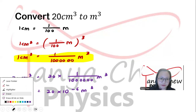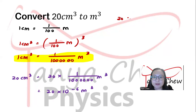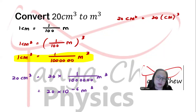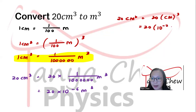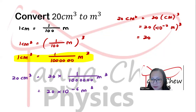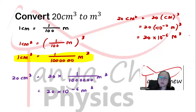Using the physics prefix method: 20 cm³ = 20 × (c × m)³. Centi c is 10⁻², so you have 20 × (10⁻² × m)³ = 20 × (10⁻²)³ × m³ = 20 × 10⁻⁶ m³. Same answer as the math method.